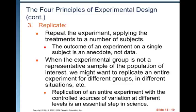Principle three is replicate: repeat the experiment applying treatments to a number of subjects. The outcome of an experiment on a single subject is an anecdote, not data. When the experiment group is not a representative sample of the population of interest, we might want to replicate the entire experiment for different groups in different situations. Replication of an entire experiment with controlled sources of variation at different levels is an essential step in science.